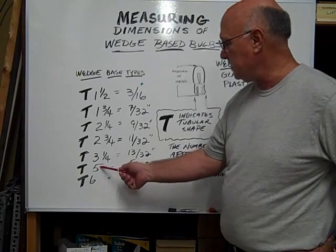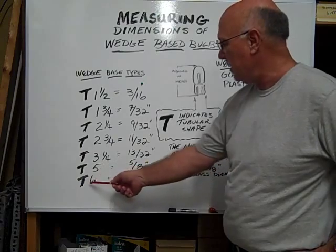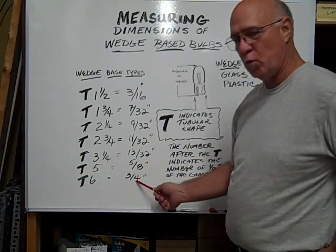As you see, that's a whole number, so it's actually five eighths. So a T six would be three quarters of an inch.